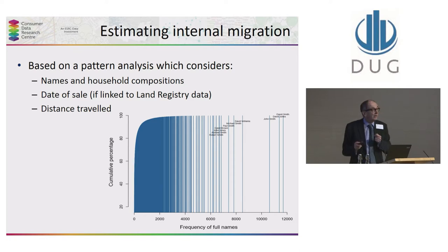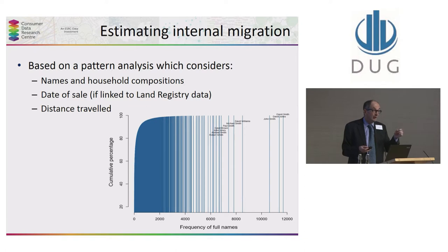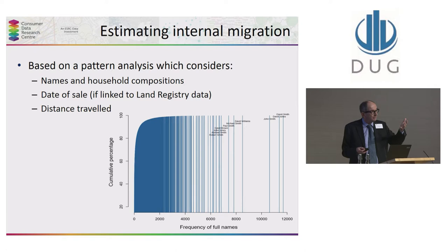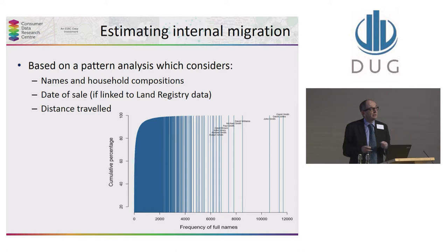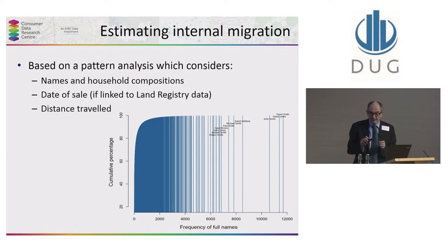Even at this end of the spectrum — the thousands of bearers of the name John Smith — when we pair them within households, the most common pairing of names in households in Britain is John and Margaret Smith. Even then there are unlikely to be many pairings of those particular names. We've also cross-referenced these data with the land registry data, so even if there are multiple occurrences of John and Margaret Smith, when they disappear from one register and appear in another they're unlikely to have moved house within the same calendar year.